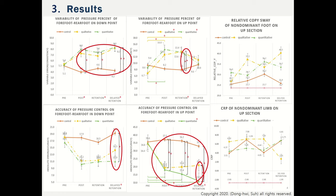There were no significant differences in relative COP sway, but the qualitative group tended to sway more in the anterior-posterior direction while squatting, meaning the qualitative group had lower accuracy but swayed more to control plantar pressure.